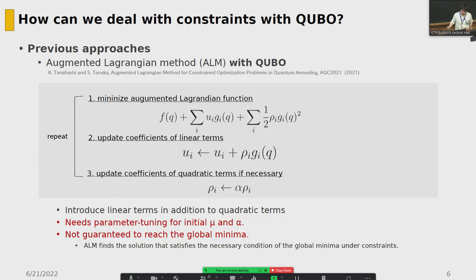Recently, Tanahashi and Tanaka introduced a method applying the Augmented Lagrangian Method to QUBO. Since QUBO consists of discrete variables, applying ALM is non-trivial. But they showed that applying the augmented Lagrangian method improves the ability to find a solution compared to the naive penalty method.